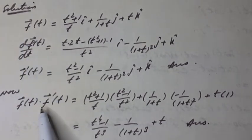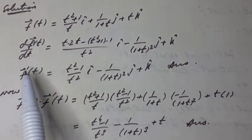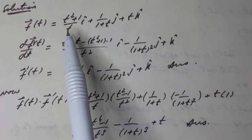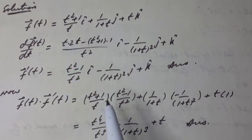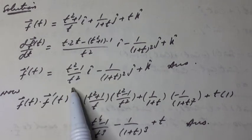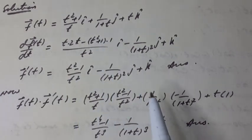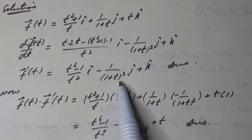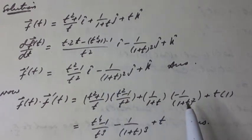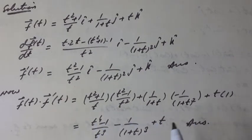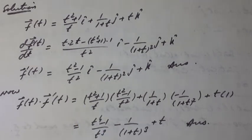Now, f-vector(t) dot f-vector-dash(t) equals [(t² + 1)/t · (t² − 1)/t²] + [1/(1 + t) · (−1/(1 + t)²)] + [t · 1]. According to the definition of the scalar (dot) product, this equals (t⁴ − 1)/t³ − 1/(1 + t)³ + t.